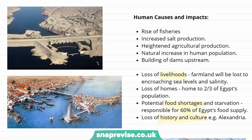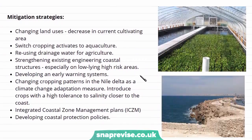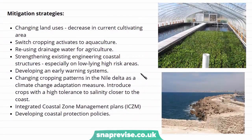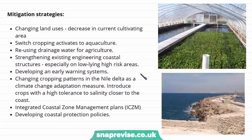Unfortunately, if we can't find a way of turning back the tides and reducing sea level change, this whole historic town of Alexandria will be submerged. Finally, we're going to look at some mitigation strategies which people have suggested in terms of reducing the impact on the Nile Delta from coastal erosion and rising sea levels.